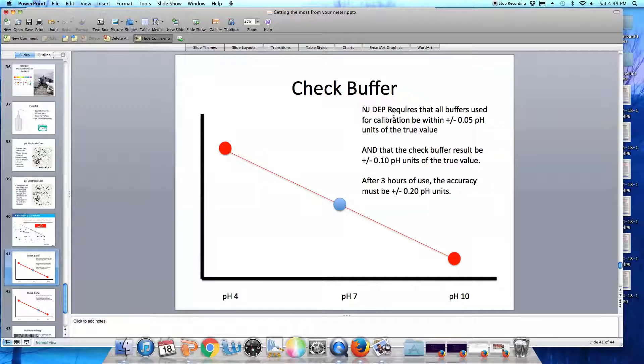The New Jersey DEP requires that all of the buffers we use for calibration be within 0.05 pH units of their true value. So if you buy a pH 4 buffer, the label says pH 4, but the actual value is 3.9, that would not meet this New Jersey DEP standard, and you shouldn't be using that buffer.